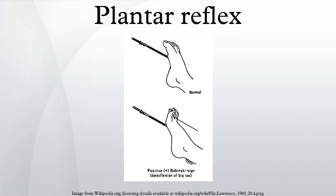Pathways — afferent: nociception detected in the S1 dermatome travels up the tibial nerve to the sciatic nerve to roots of L5, S1, and synapses in the anterior horn to elicit the motor response. Efferent: motor response back through the L5, S1 roots to the sciatic nerve to its bifurcation. Toe flexors are innervated by the tibial nerve; toe extensors are innervated by the deep peroneal nerve. Loss of normal adult descending pyramidal control of the reflex arc to suppress extensor withdrawal results in the upgoing toes in the plantar reflex known as Babinski's sign.